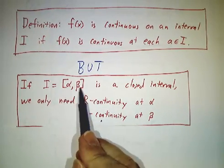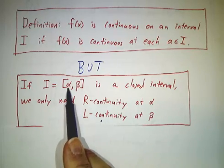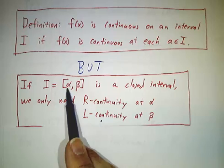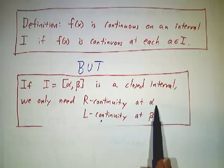The two exceptions are the endpoints. If we have a closed-end interval, that is, if we include the endpoints, then at the left endpoint, we can't talk about what happens when x is less than α, because that's not in our interval. We only care about what's happening when x is bigger or equal to α.